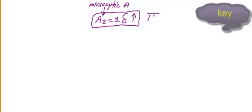Some words about hemoglobin electrophoresis. If you see microcytic anemia, the second step is to go to hemoglobin A2, which is basically two delta. Here you will see hemoglobin A2 increase — that means thalassemia. Keep in mind: whenever you see hemoglobin A2 increase, that means thalassemia.